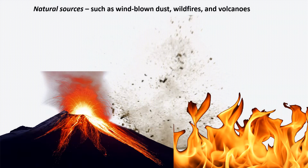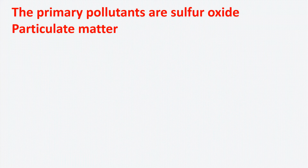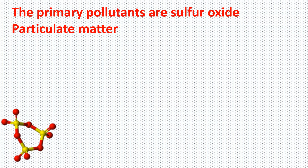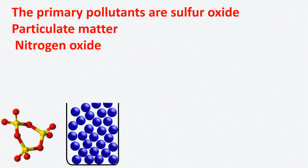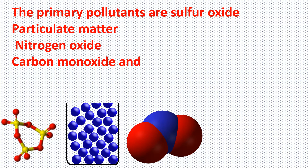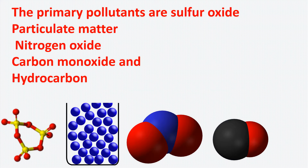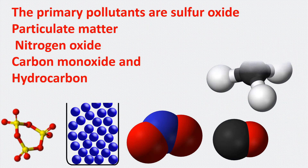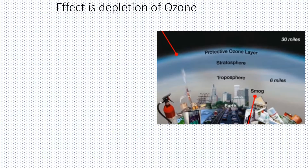The primary pollutants from these sources are sulfur oxide, particulate matter, nitrogen oxide, carbon monoxide — that is carbon with one oxygen — and hydrocarbons. All of these are the pollutants causing air pollution.